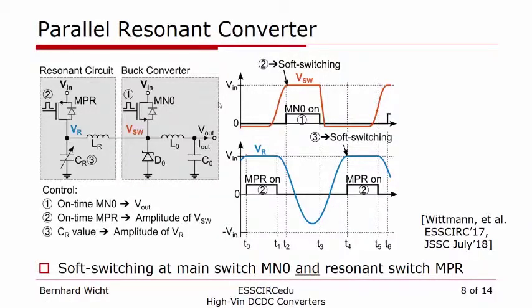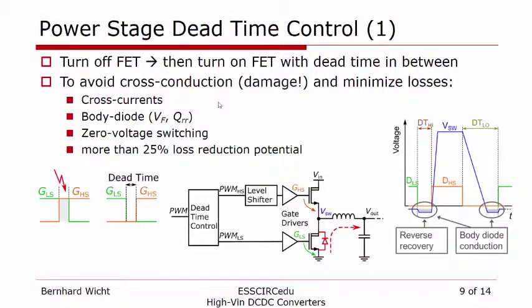The second concept I would like to discuss is dead time control. Looking again at the DC-DC converter power stage half-bridge: we first want to turn off one device before turning on the other, otherwise we get cross-currents which may cause damage. However, we cannot extend the dead time too long because other loss components come in, like body diode conduction and reverse recovery. There is an optimum dead time which gives minimum losses, with a potential to reduce losses by more than 25%.